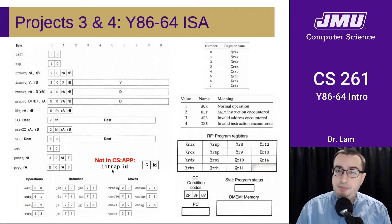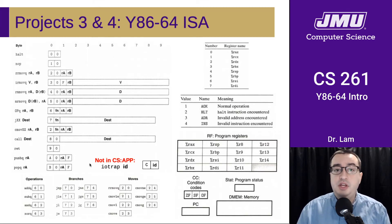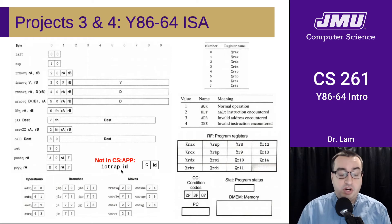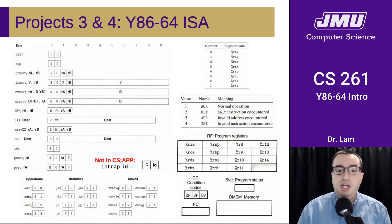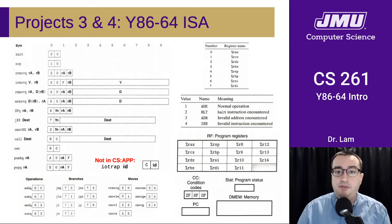There's also an instruction we're adding that is not in your textbook, so that we can do a little input and output in our programs — this is the IO trap instruction. It takes a particular ID number that tells the machine to do some sort of input or output. There will be an opportunity to implement that as part of the highest grade level in project four.